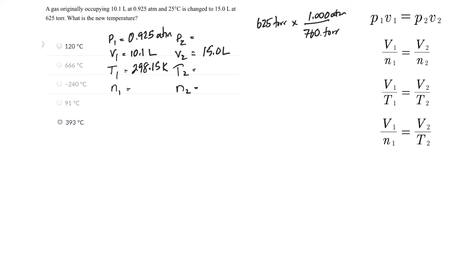625 torr. So I have to multiply that by 760 torr is the same for atmosphere as one atmosphere. Okay, calculator. 625 times divided by 760.